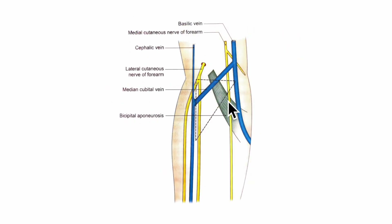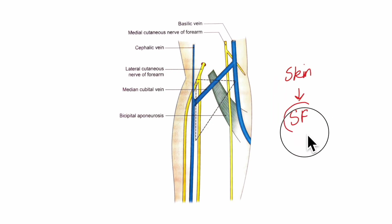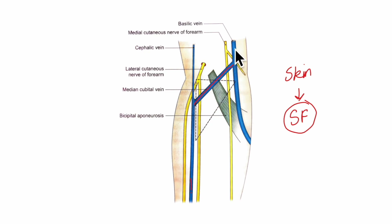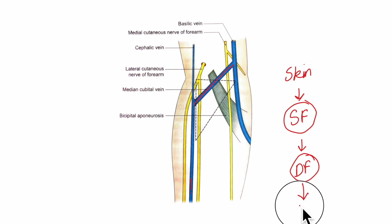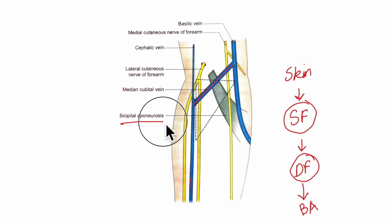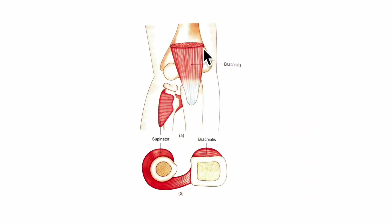The roof of the cubital fossa is formed by the skin. Underlying it comes the superficial fascia, which contains the median cubital vein that connects the cephalic and basilic veins. Beneath the superficial fascia comes the deep fascia, and then the bicipital aponeurosis — a fibrous sheath that forms as part of the tendon of the biceps brachii muscle.